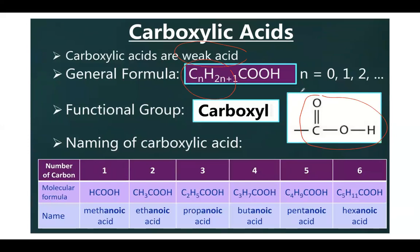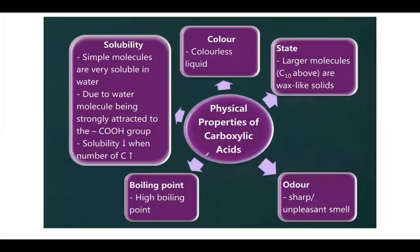The n in the general formula can be zero, one, two, or any number depending on the carbon chain. The simplest carboxylic acid is methanoic acid where n equals zero. Then you have ethanoic acid (acetic acid), propanoic, butanoic, pentanoic, hexanoic — those are some common examples of carboxylic acids with a carboxyl functional group.